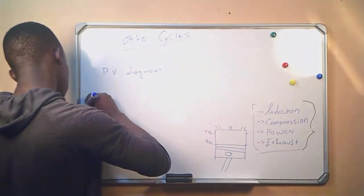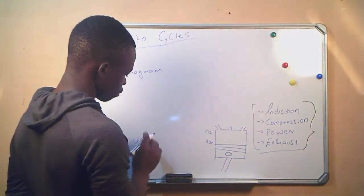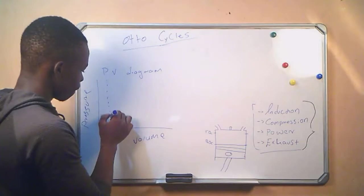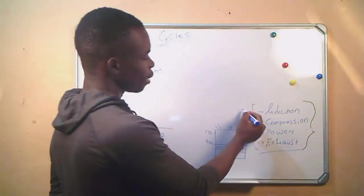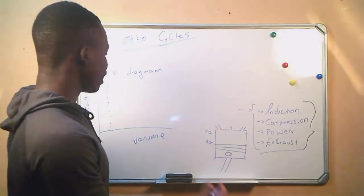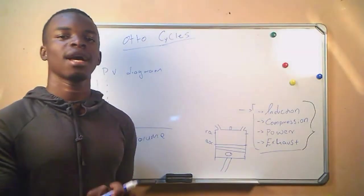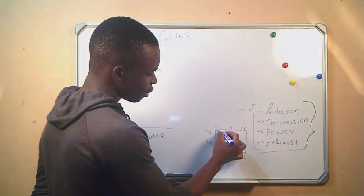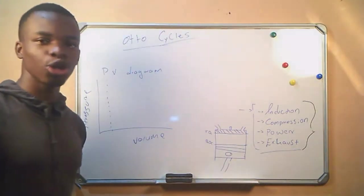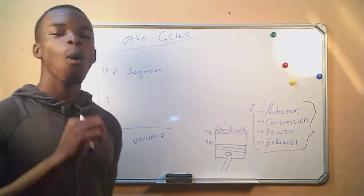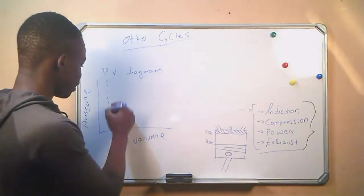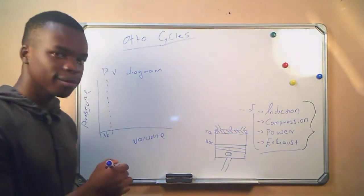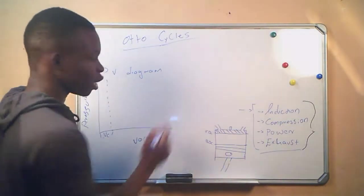The vertical axis is pressure, and the horizontal axis is volume. We start with our induction stroke, which is where we are introducing the fuel mixture into the cylinder. We have our top dead center here. There is what we call clearance volume, which is the volume that our piston cannot reach. From here to here, this is our clearance volume, VC. Whatever we do, we are going to start from here going in that direction.